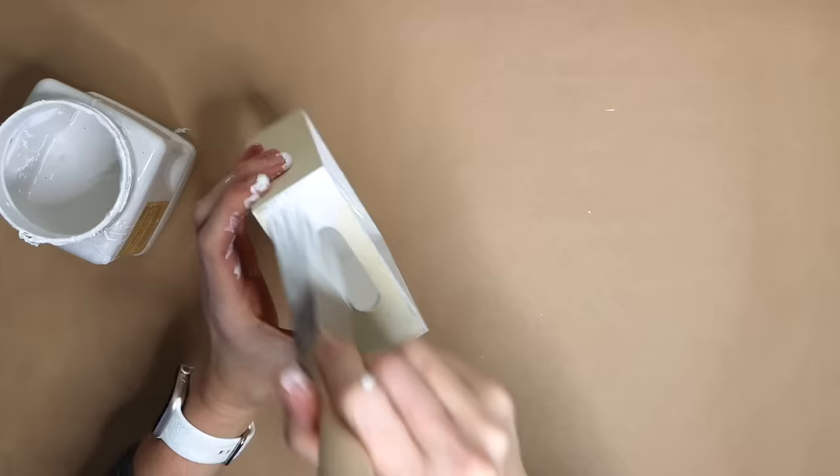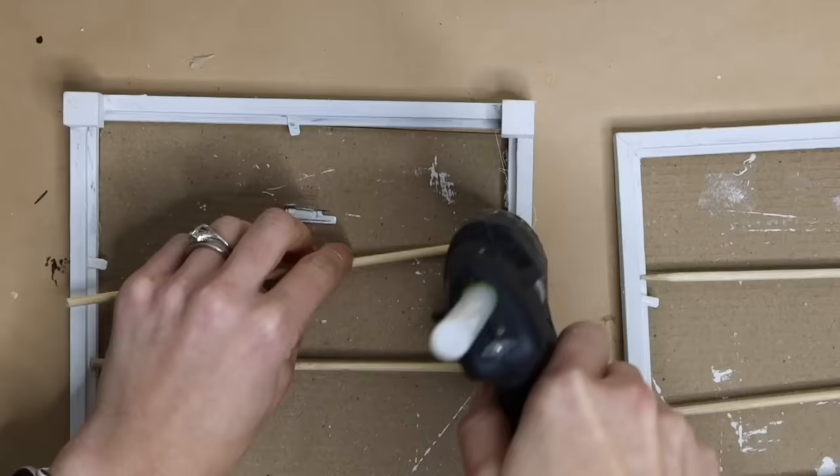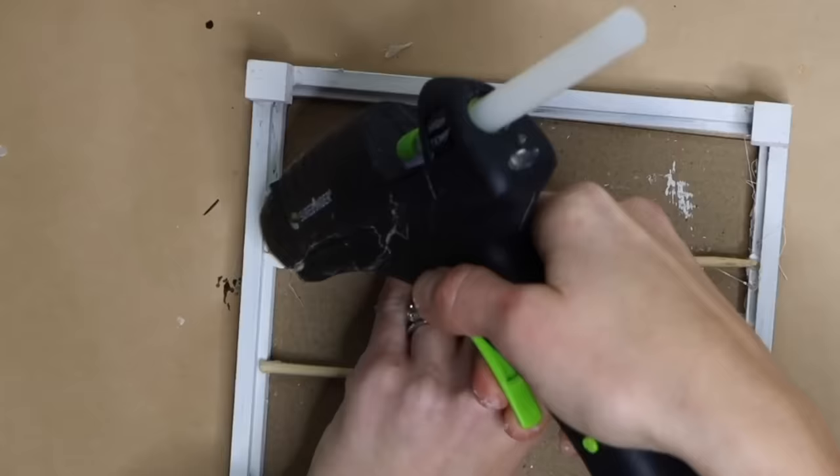Take two wood trays and paint them white. Once dry, add a border of gold washi tape to the top. Next, take wood skewers and cut them to size. Hot glue them to each side of the underside of the frames.